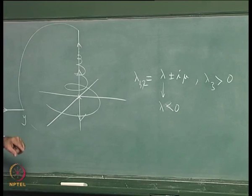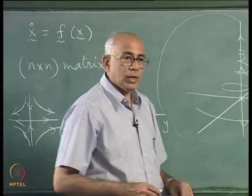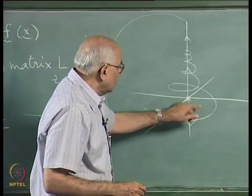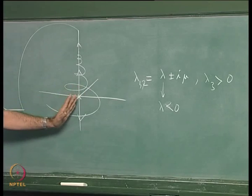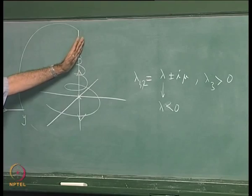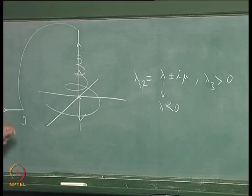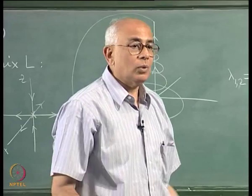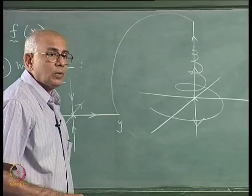For this saddle-focus configuration, you expect eigenvalues λ₁,₂ = λ ± iμ with λ < 0 (flowing inward) and λ₃ > 0 (flowing away along z). This kind of dynamical behavior is one of the key mechanisms by which chaos appears in three-dimensional flows. The genesis of chaos is buried in this behavior: the system spirals in toward the origin in a two-dimensional subspace but flows off in the third direction, gets reinjected, and repeats in a chaotic manner.